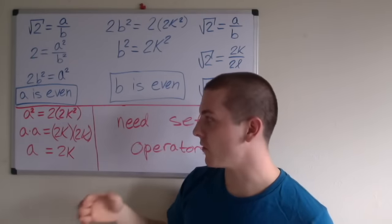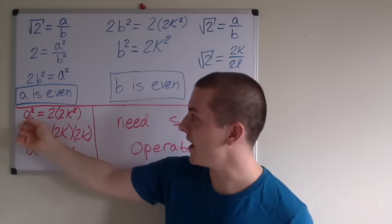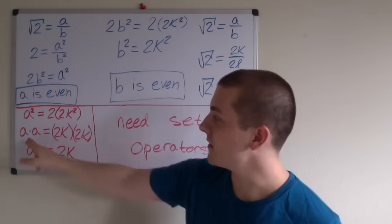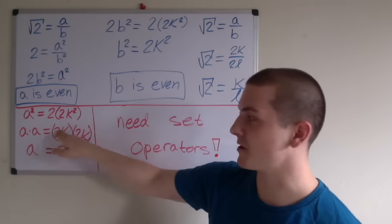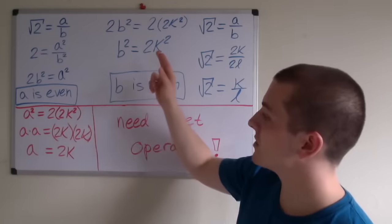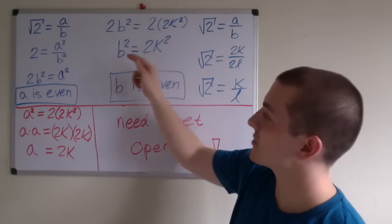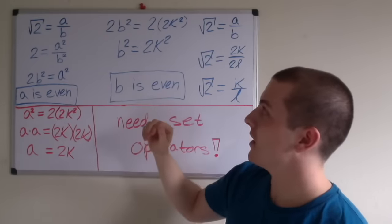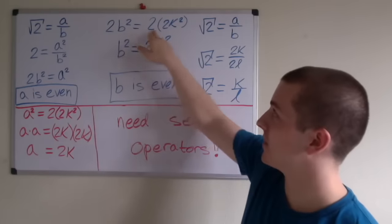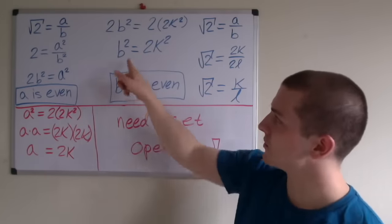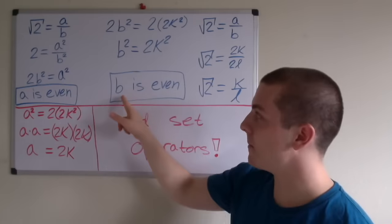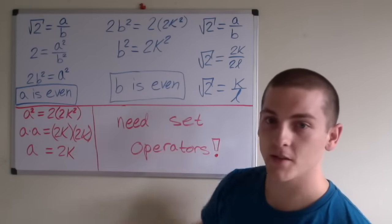Since a squared is even, we know that a is even because a squared equals 2 times some integer. The integer I chose was 2k squared. That means that a times a can be expressed as 2k times 2k, which is to say that a equals 2k. I can now substitute 2 times 2k squared for a squared. And that leaves us with b squared equals 2k squared once these 2s cancel out. This also means that b squared is even, because b squared equals 2 times some integer, which is to say that b is also even following this same logic.